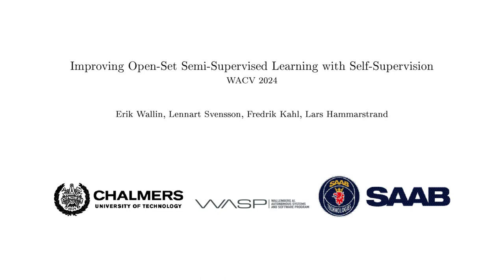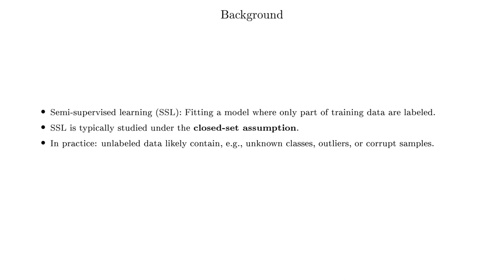Semi-supervised learning is a paradigm of machine learning where only part of the training data are labeled and typically a much larger part are unlabeled. A majority of works in semi-supervised learning consider a closed-set setting where we assume that the unlabeled data only contain data from the same classes as the labeled set. For example, if we are training a model to classify cats and dogs, we assume that the unlabeled data only contains images of cats and dogs.